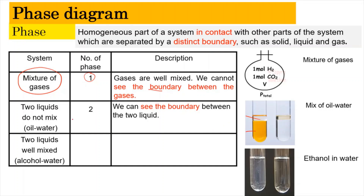Now, let's say you have a system of two liquids that do mix — for example, alcohol and water. Alcohol will dissolve inside the water, and as a result it is going to look like a clear solution. From your observation, you can only see one clear solution; you cannot see the separation, and you cannot see the boundary. So the number of phases here is going to be one.